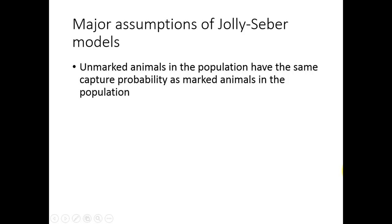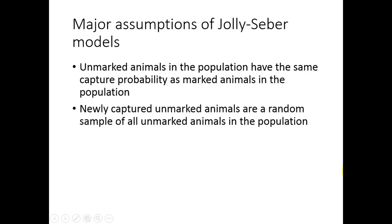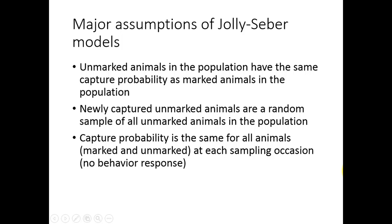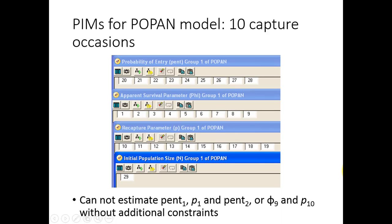The major assumptions of the Jolly-Seber models are: unmarked animals in the population have the same capture probability as marked animals; newly captured unmarked animals are a random sample of all unmarked animals in the population; and capture probability is the same for all animals at each sampling occasion. Here are examples of PIMs for a POPAN model with 10 capture occasions in Program MARK. The pent parameter is the same as the recruitment parameter b from the reading. The parameters pent1, p1, and pent2, or p9 and p10, are not identifiable without additional constraints. The use of individual covariates is limited for POPAN models — see the MARK documentation for details.